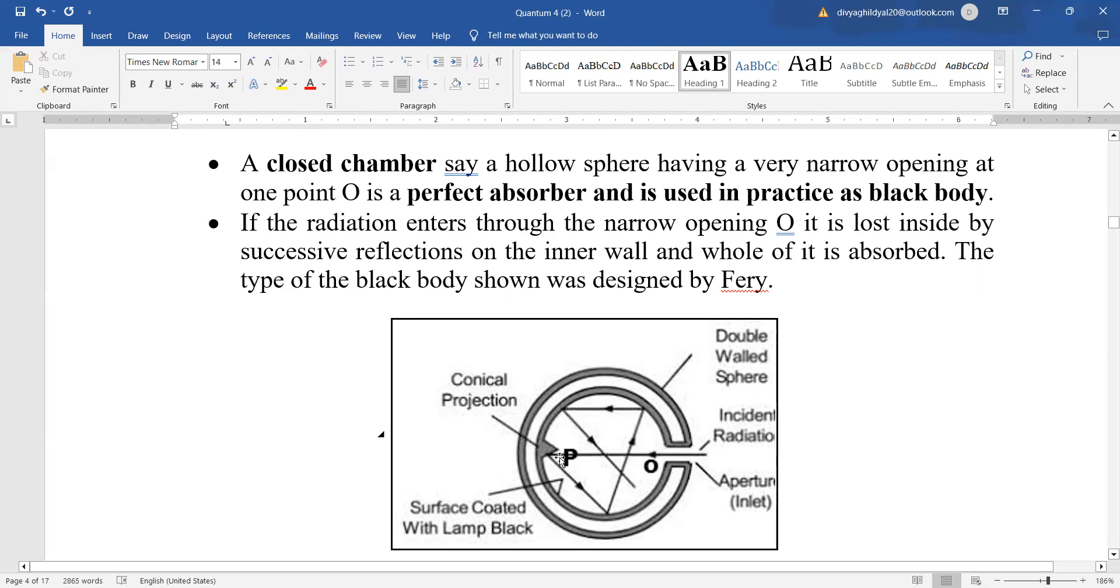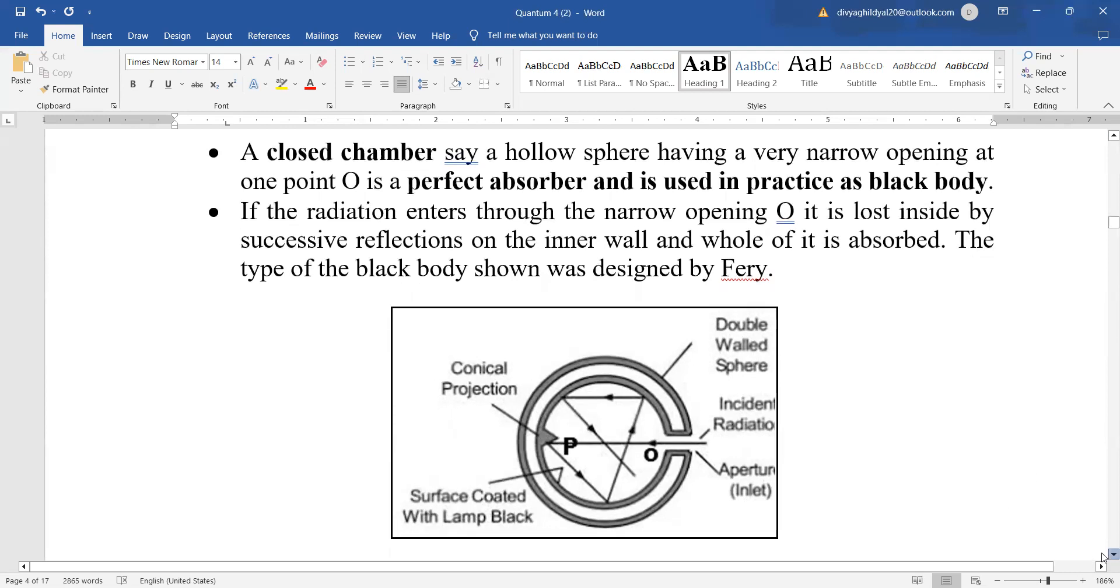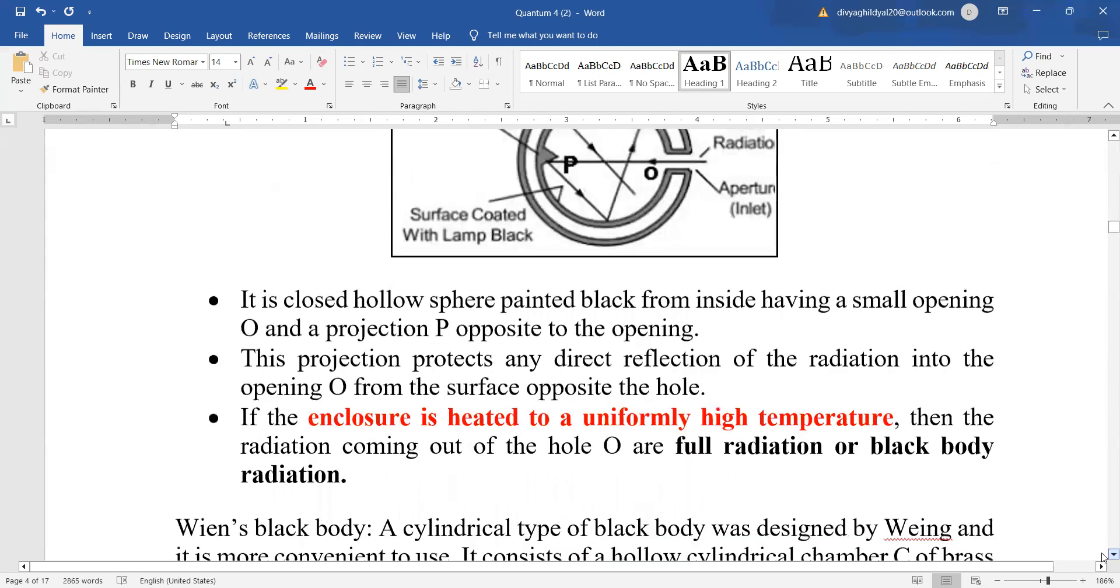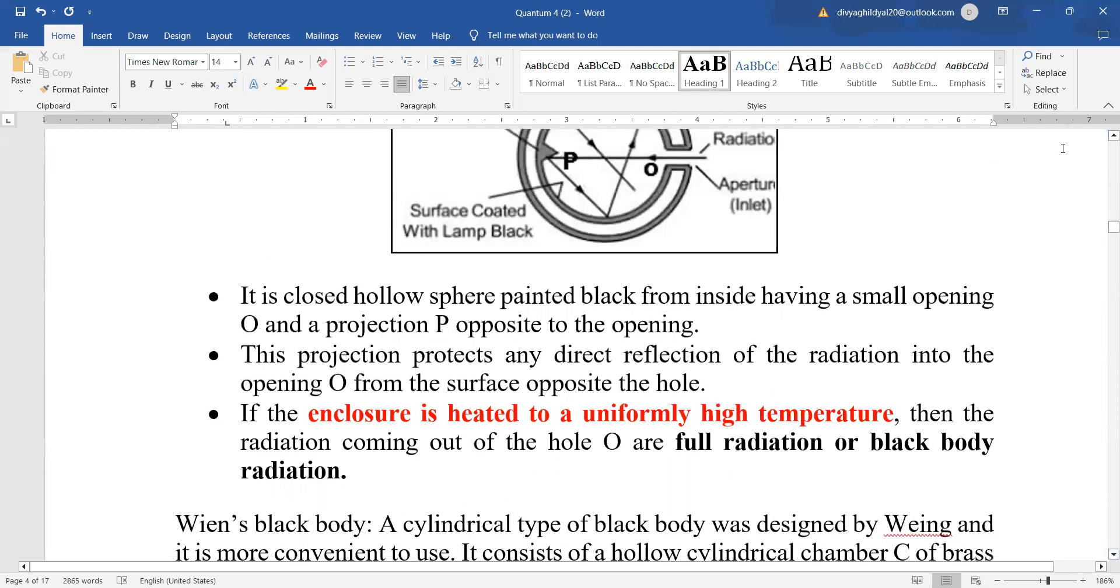This is how the incident radiations will come here. It is having a conical projection P. The radiation will suffer multiple reflections here and it is coated with lamp black, then double walled sphere. This is a practical example of black body. It is a closed hollow sphere which is painted black from inside, having a very small opening.